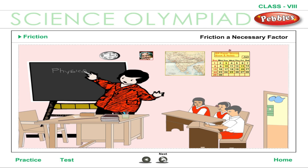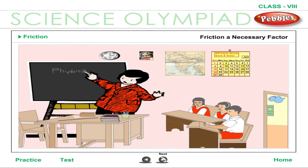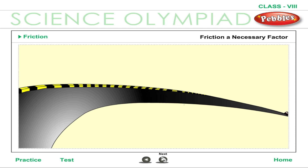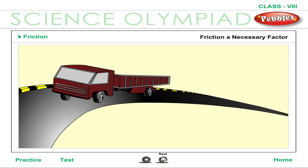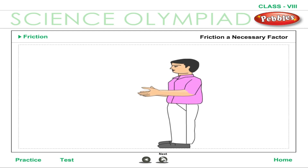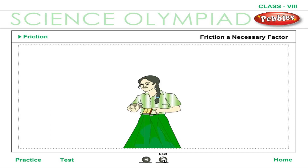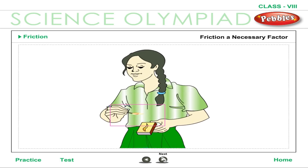Friction is a necessary factor. When your teacher writes with chalk on the blackboard, its rough surface rubs off some chalk particles which stick to the blackboard. If an object started moving, it would never stop if there were no friction. Had there been no friction between the tires of automobiles and the road, they could not be started, stopped, or turned to change direction. Friction can also produce heat — vigorously rub your palms together for a few minutes. When you strike a matchstick against a rough surface, it catches fire. You can cite various other examples in which friction produces heat.